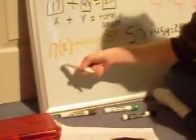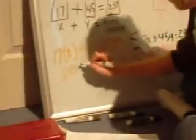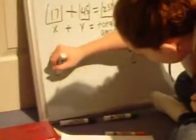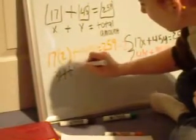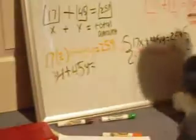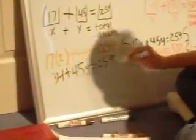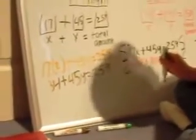So 17 times 2 is 34 plus 45Y. So I just kept everything the same except for the 17 times 2 and I equaled that to 34.